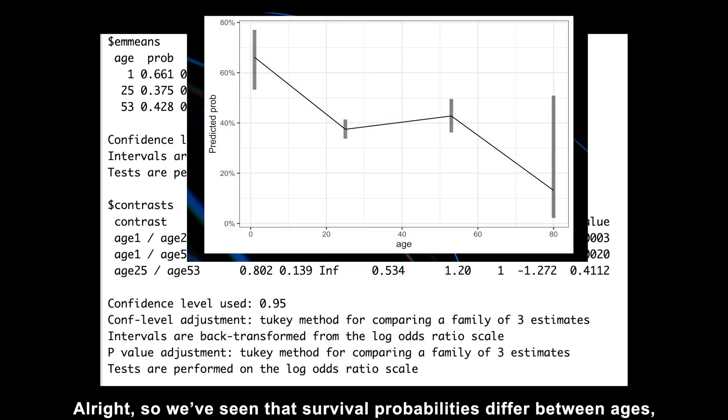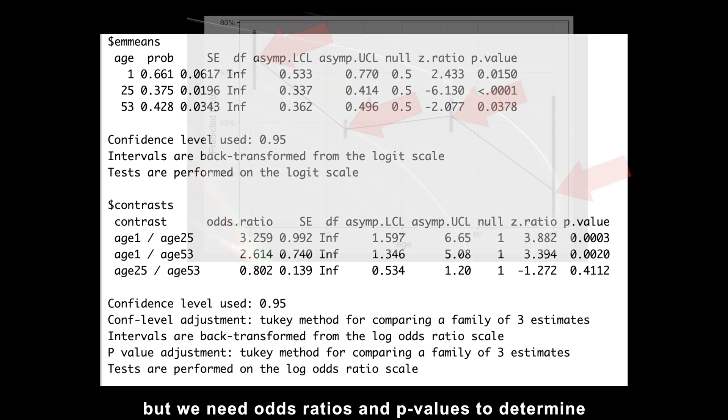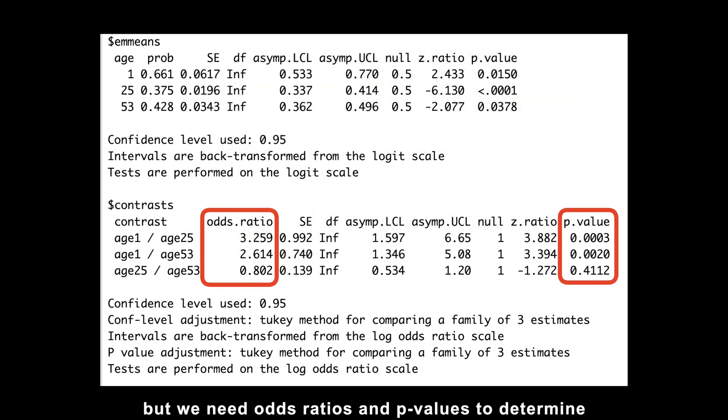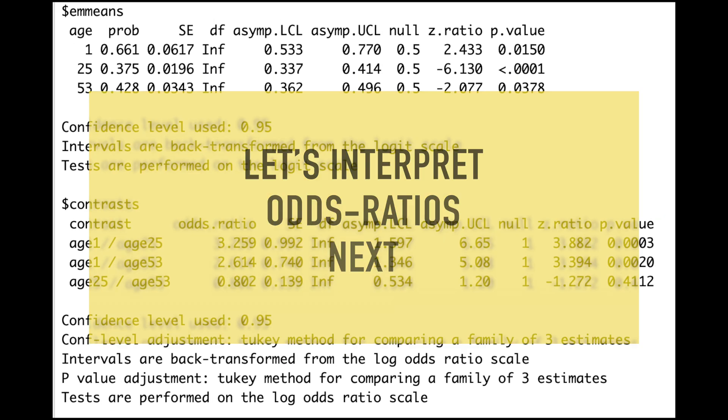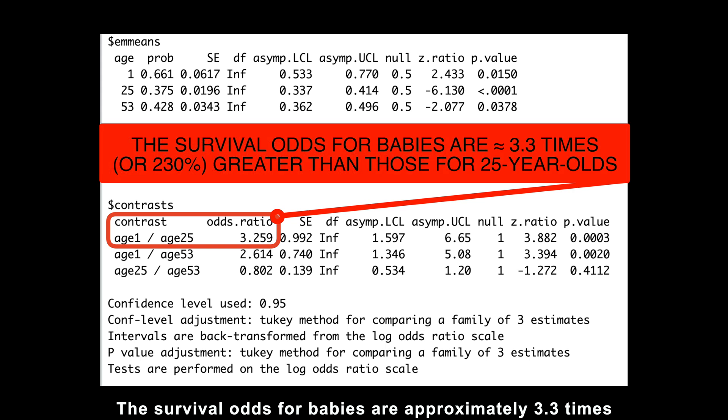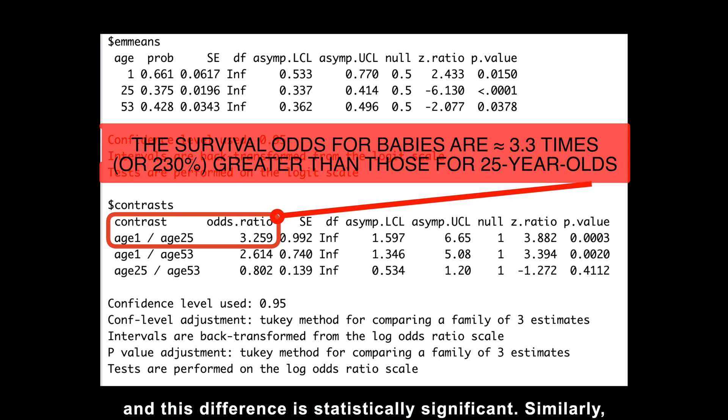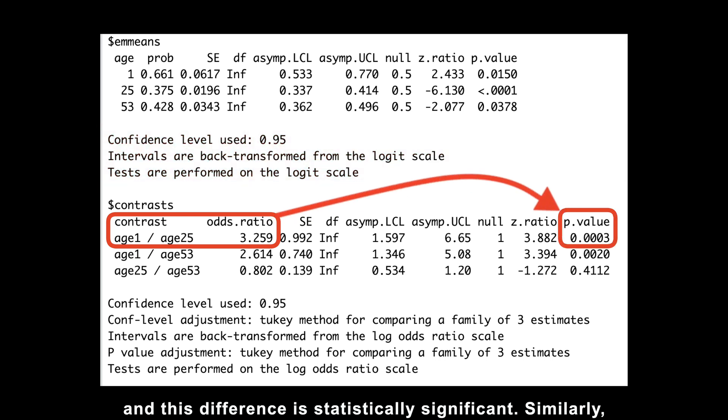Alright, so we've seen that survival probabilities differ between ages, but we need odds ratios and p-values to determine if these differences are statistically significant. Thus, let's interpret odds ratios next. The survival odds for babies are approximately 3.3 times, or 230% greater than those for 25-year-olds. And this difference is statistically significant.